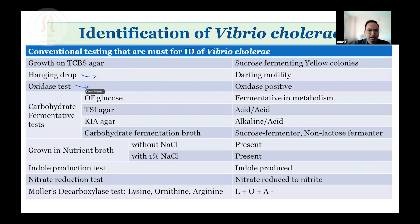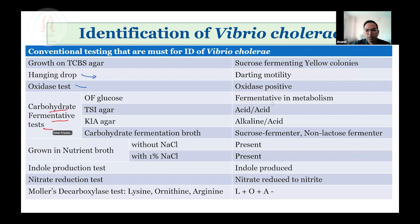The oxidase test is recommended to be done using growth obtained on non-inhibitory medium like blood agar, nutrient agar, or even growth on triple sugar iron agar and KIA can also be used, but it is not to be done using growth on TCBS or Thiosulfate-Citrate-Bile-Sucrose agar. Further testing can be done using carbohydrate fermentative tests like OF glucose. The organism shows fermentative metabolism. TSI agar reaction will be acid over acid. KIA agar will be alkaline over acid without any gas production.